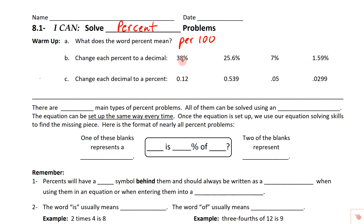From a percent to a decimal, we move the decimal two places — one, two — so we get 0.38. So 38% is 0.38. We're going to do the same thing with 25.6 — move it one, two — so we get 0.256. That's the decimal equivalent.